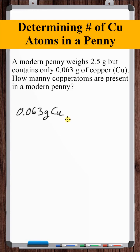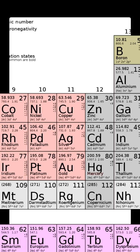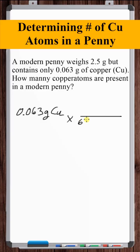So to do that, let's first convert to moles of copper. We need a relation of grams of copper to moles of copper. We can use the atomic weight of copper, 63.546 grams of copper per mole of copper.